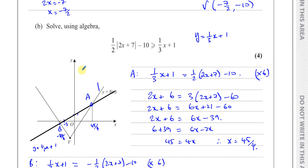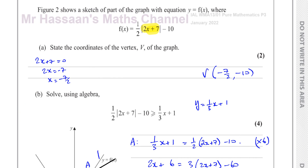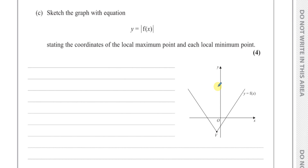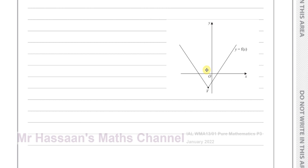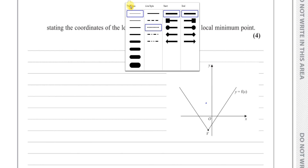That's a nice way of dealing with this question — that's the answer to part B. Now moving on to part C, which says sketch the graph with equation Y equals the modulus of F of X. When you have the modulus of F of X, whatever is below the X axis is reflected above the X axis.